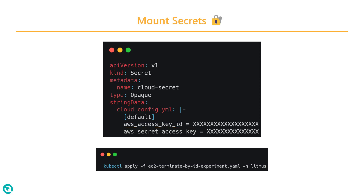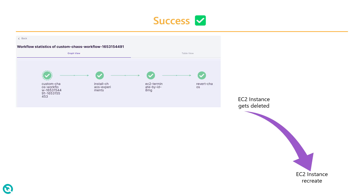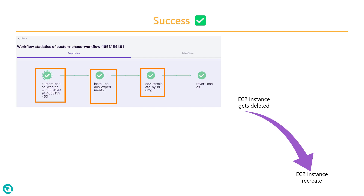Once you successfully apply it, and then re-execute the overall workflow, it will start the custom workflow again, install the experiment again, then terminate your EC2 instance. Your LitmusChaos will have access to your EC2 resource and will be able to successfully delete it. During the revert chaos phase, it will automatically spin up and go back to the previous state — basically it will get deleted and then recreated.